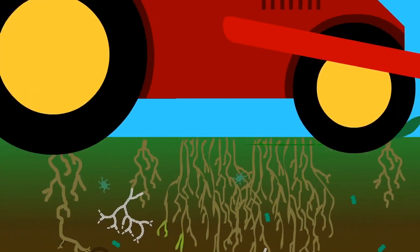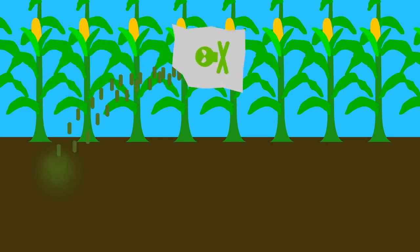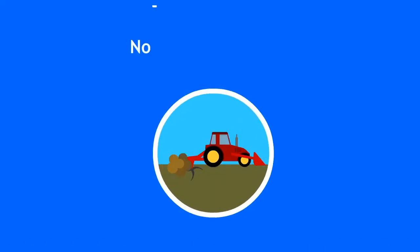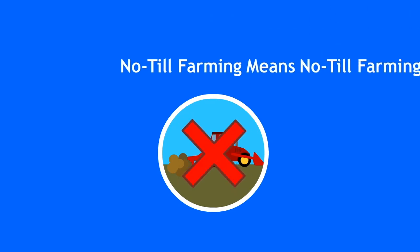When soil is turned over by a machine, most of these organisms are killed, so the crops must rely on chemical fertilizer, which ends up leaching into the water. Central to no-till farming is to not do that.